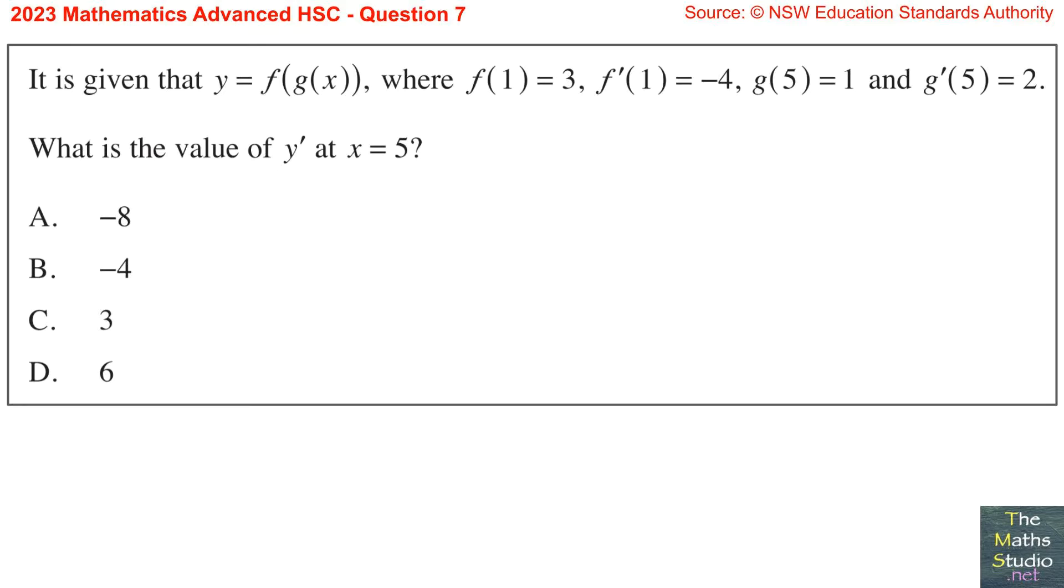Question 7. It is given that y equals f of g of x, where f of 1 equals 3, f dash of 1 equals negative 4, g of 5 equals 1, and g dash of 5 equals 2. What is the value of y dash at x equals 5?